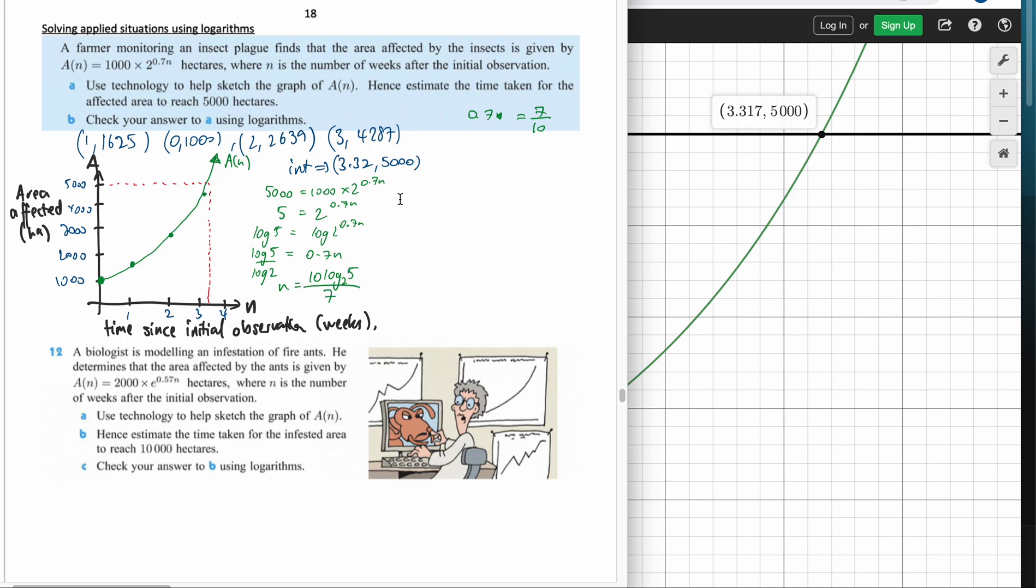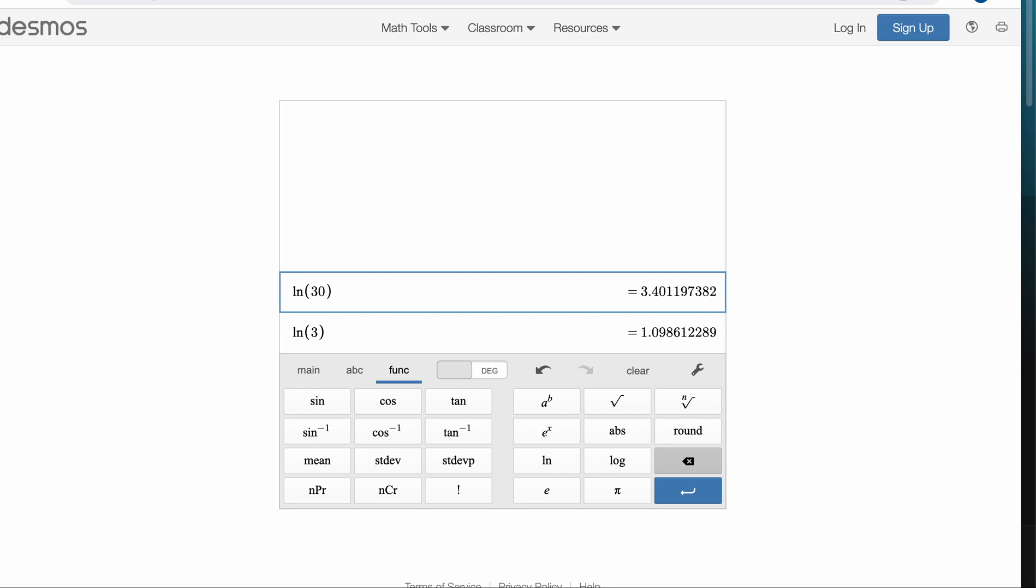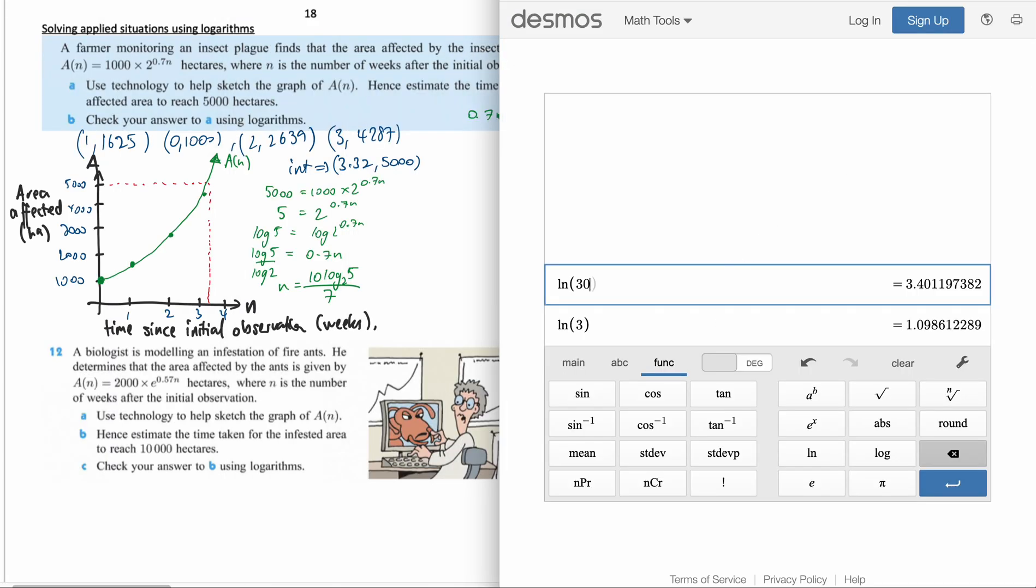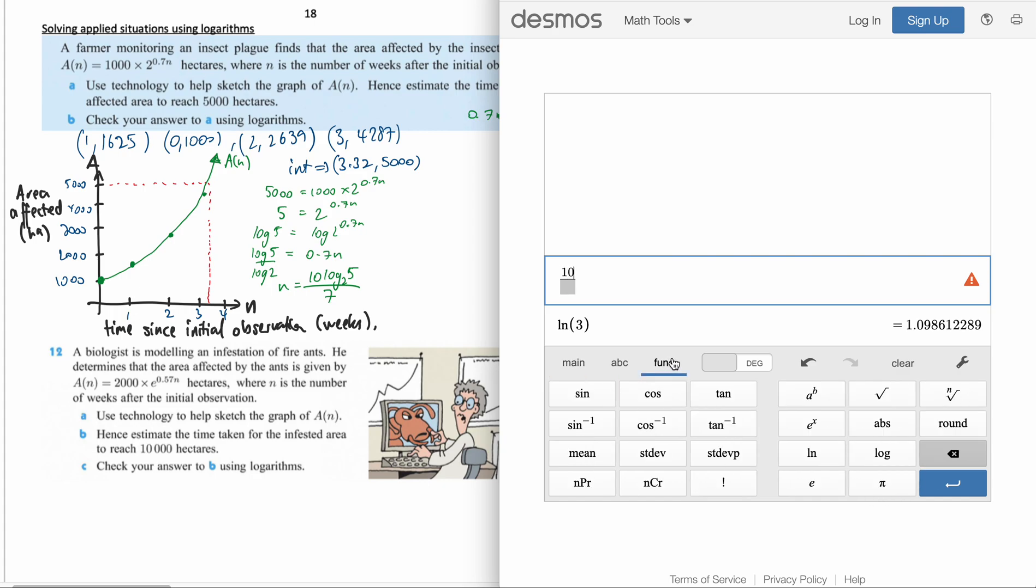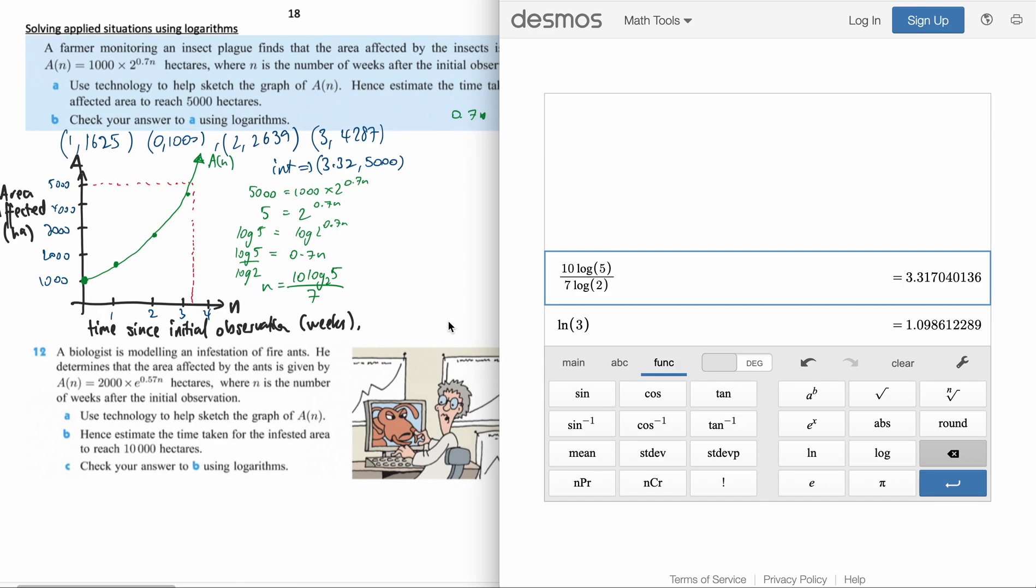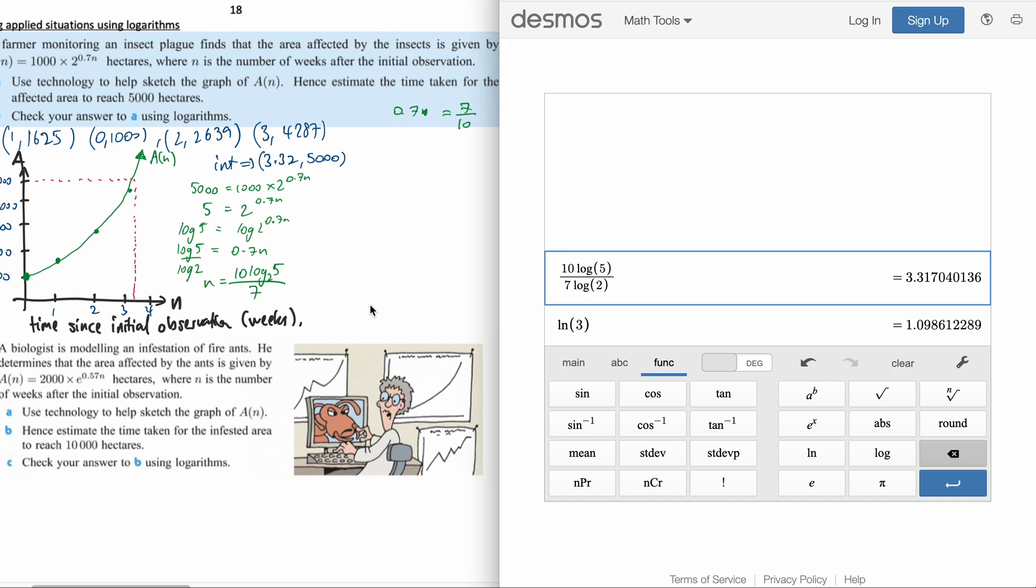What we've done is we've found an exact answer. If we put this in our calculator we're expecting the number 3.32 to come out. So I'll put it over here. I'm going to have to go fraction and then log 5 divided by log 2 times 10/7. We've got 3.317, which matches up nicely. So that worked. They probably want you to get the 5,000 as well. So if you plug 3.32 into your formula, out should pop that as well. Yeah, that's us checking your answer using logarithms and we found this answer in exact form as well.